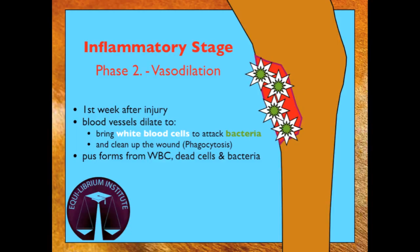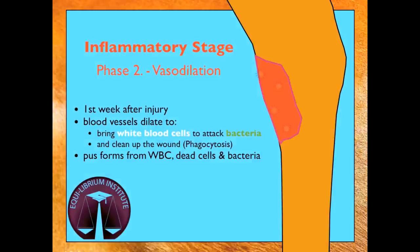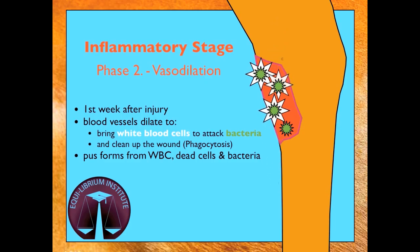The second phase of the inflammatory stage is vasodilation. This occurs during the first week after injury. When blood vessels dilate, they bring in white blood cells to attack any bacteria that has contaminated the wound. Dead cells, dead bacteria, and any debris is then removed from the wound by a process called phagocytosis. This process results in swelling and pus formation.